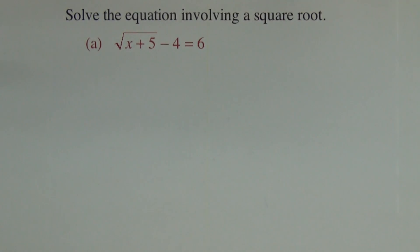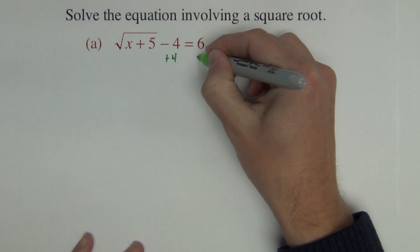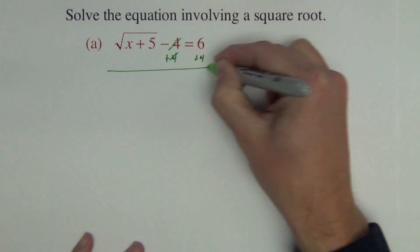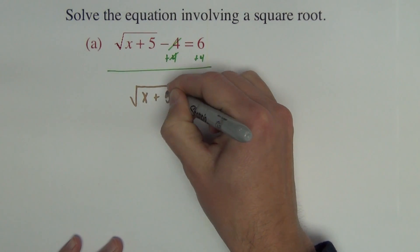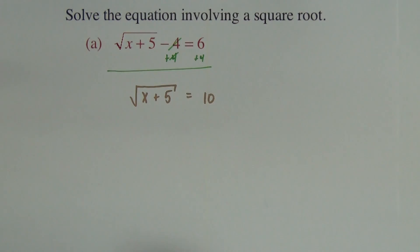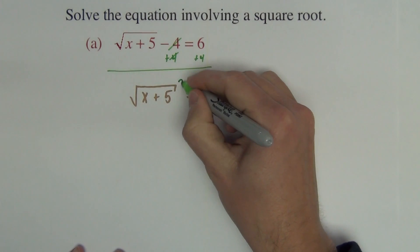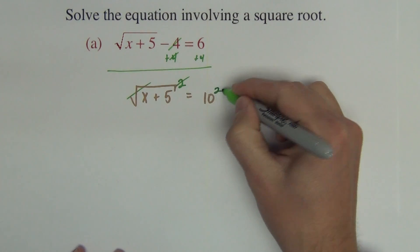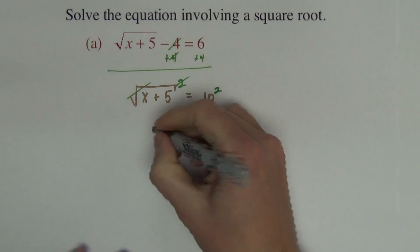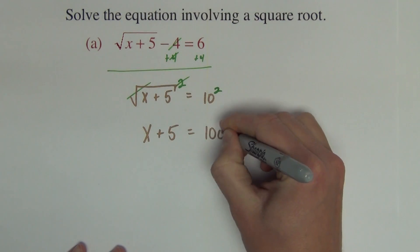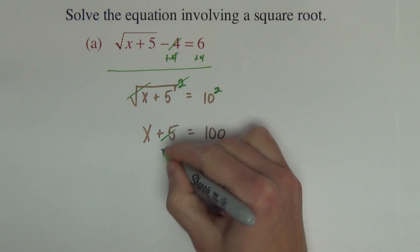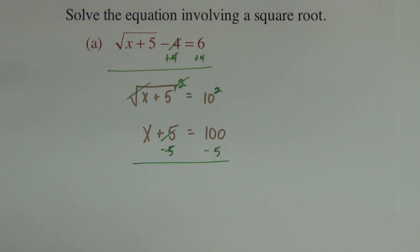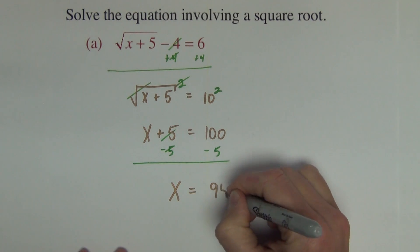Directions say solve the equation that involves a square root. The first thing to do is get the square root all by itself, so I'm going to add 4 to both sides, resulting in square root of x plus 5 equals 10. Now we square both sides to remove the square root, giving x plus 5 equals 100. Subtracting 5 from both sides gives x equals 95.